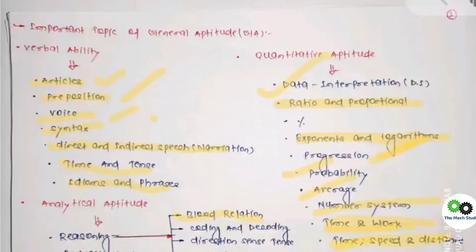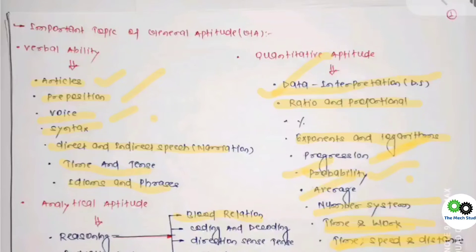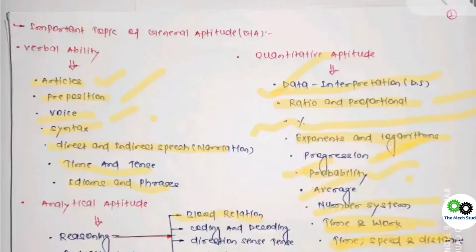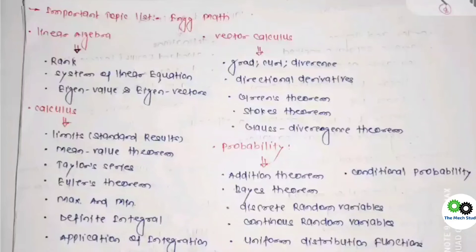Apart from that, you can also learn exponents and logarithms, progressions, probability, averages, number systems, time and work, and time-speed-distance. The three most important topics here are time and work, time-speed-distance, and probability, as probability also appears in Engineering Mathematics. For average, while the questions are generally simple, nowadays they come with a twist, so you need to be aware of that type of question as well.